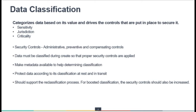Data classification is focused on how to classify data — what parameters and considerations apply when classifying any information during creation, modification, or at a later stage. The BIA, business impact analysis, is an important aspect when classifying any information, because it categorizes data based on its value and derives the appropriate controls to apply. There are different aspects: sensitivity, jurisdiction, and criticality.